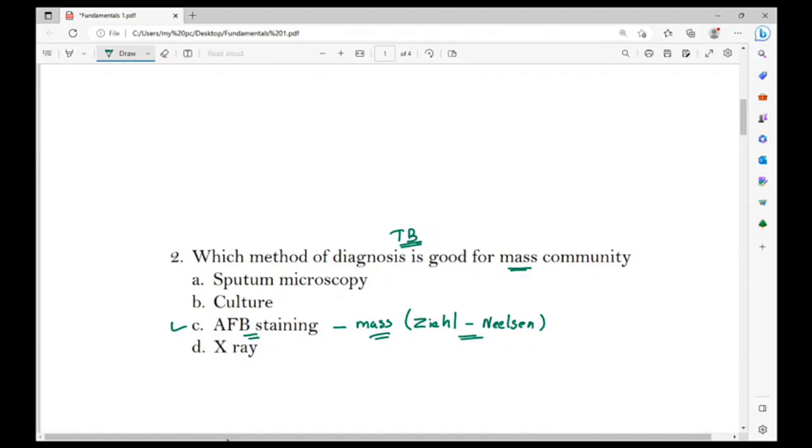Which is the confirmatory test? Sputum microscopy is the confirmatory test as per RNTCP, the Revised National Tuberculosis Control Program. RNTCP replaced the National Tuberculosis Policy. The confirmatory test is sputum microscopy.